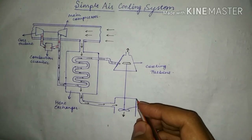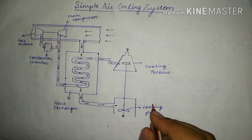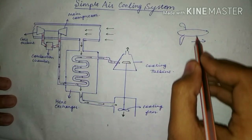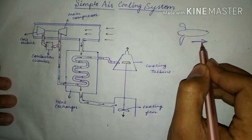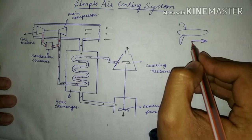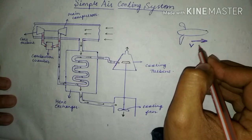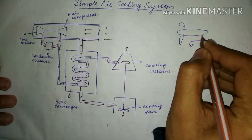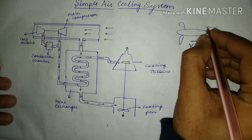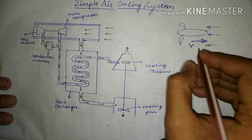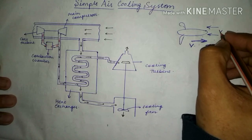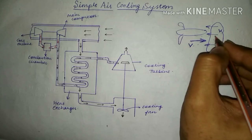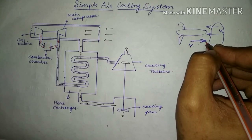This simple air cooling system is generally used in aircraft refrigeration systems. Suppose this is our aeroplane moving in one direction with velocity V. The air opposes this aircraft motion with an equal and opposite velocity. We utilize this velocity of the air for the cooling system in aircraft.